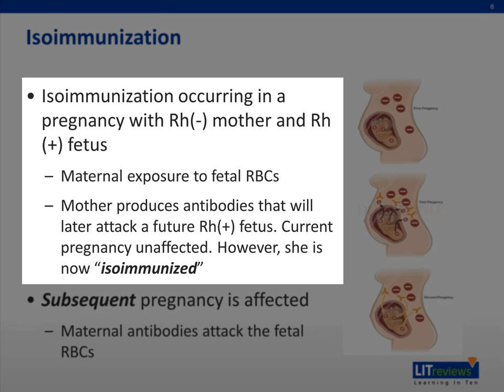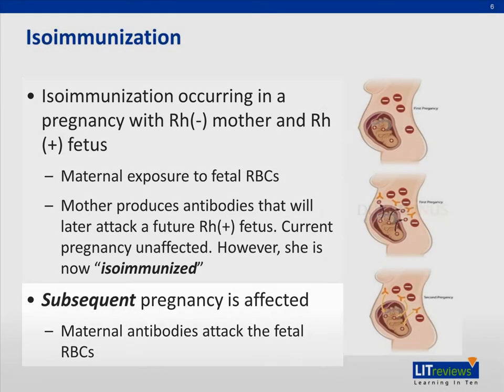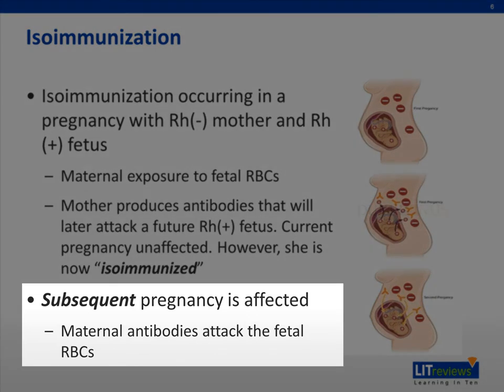This does not affect the current pregnancy, but it will affect a future pregnancy. Subsequent antigenic exposure during a succeeding pregnancy is called an isoimmunized pregnancy, and it can result in a significant increase in the maternal antibody titer. The maternal antibodies cross the placenta and target the fetal red blood cells. These sensitized fetal red blood cells are destroyed by hemolysis, causing fetal anemia.